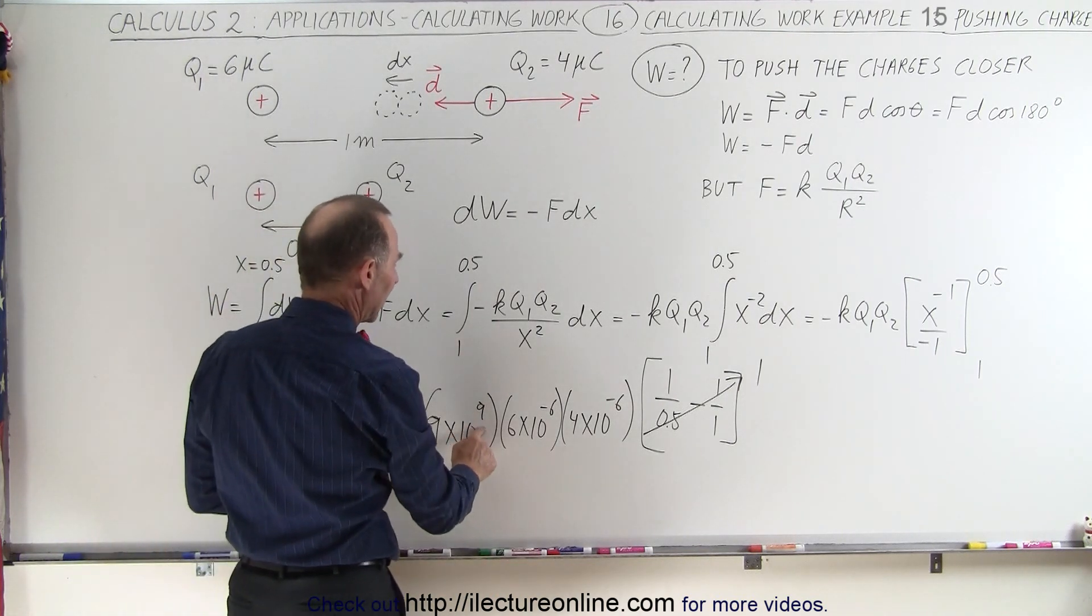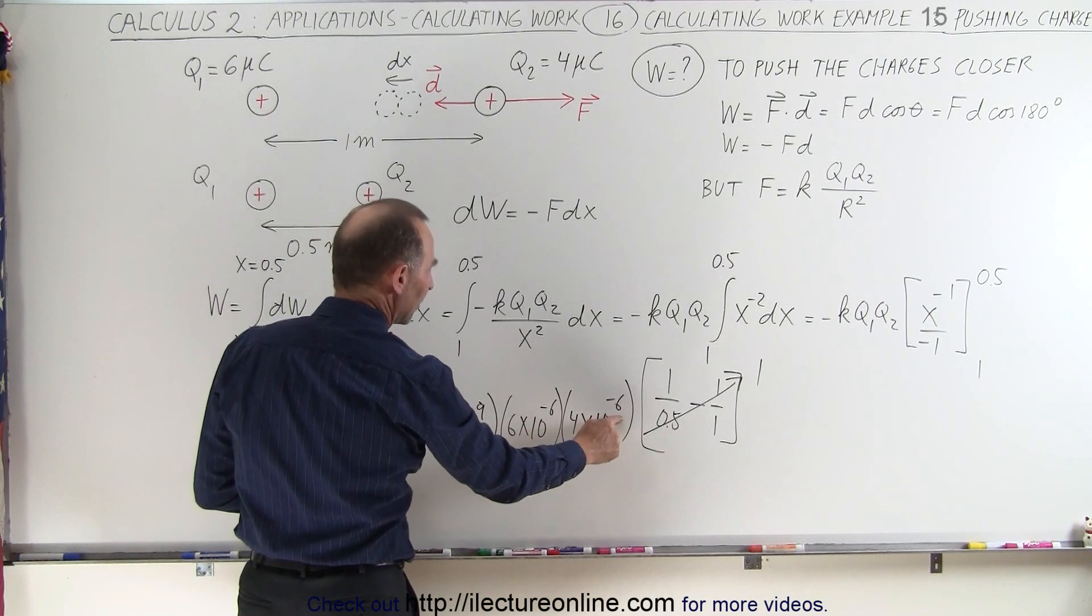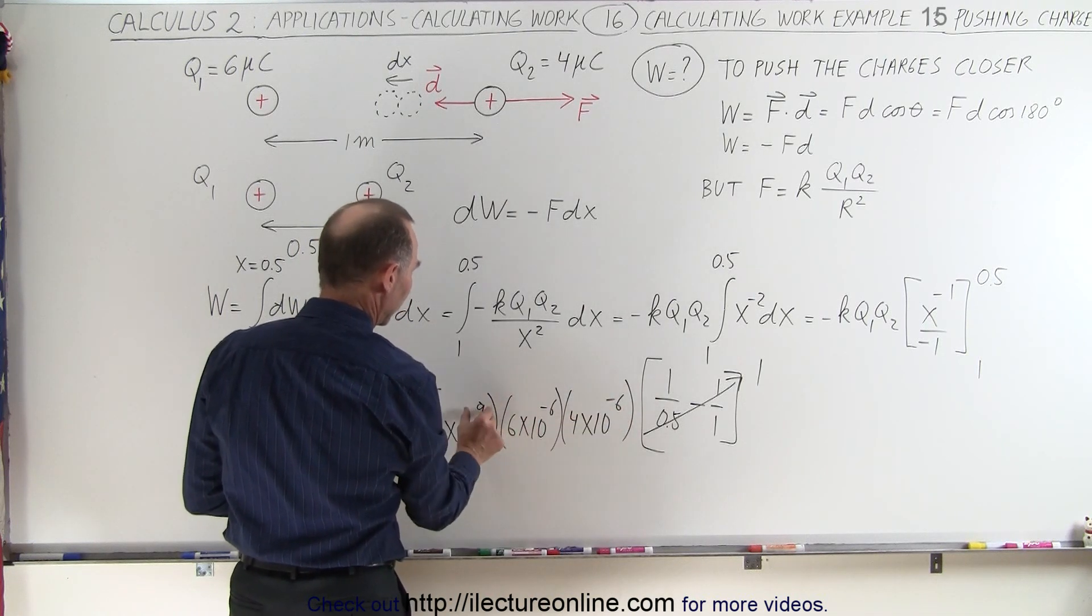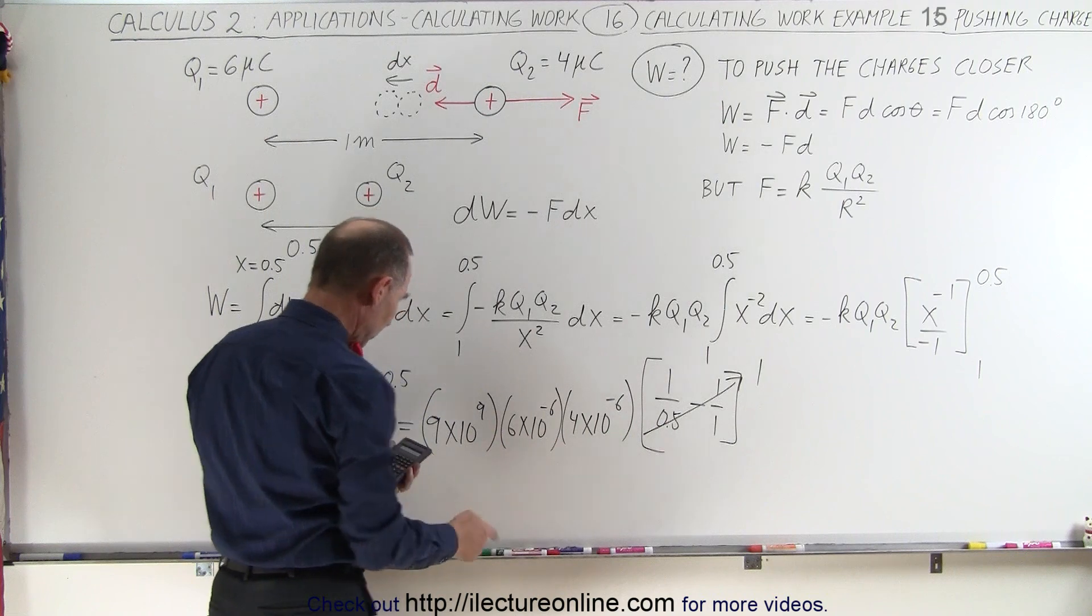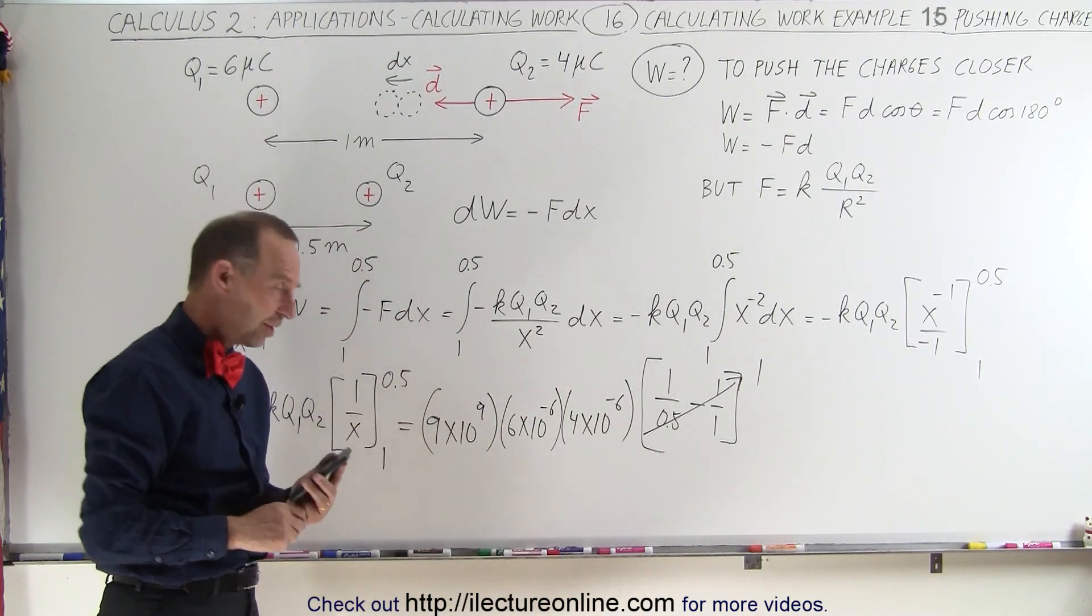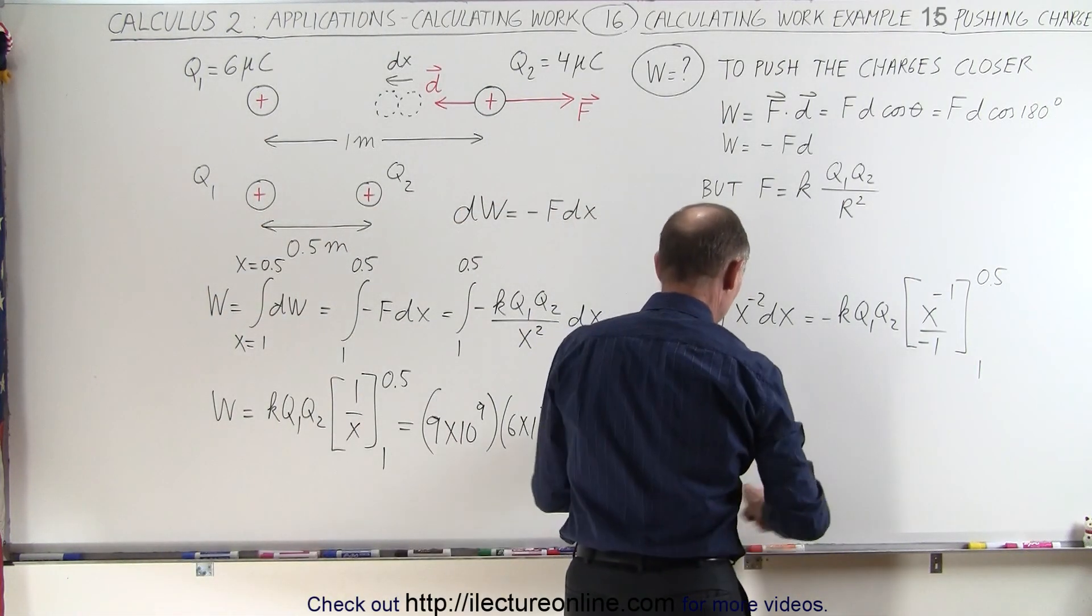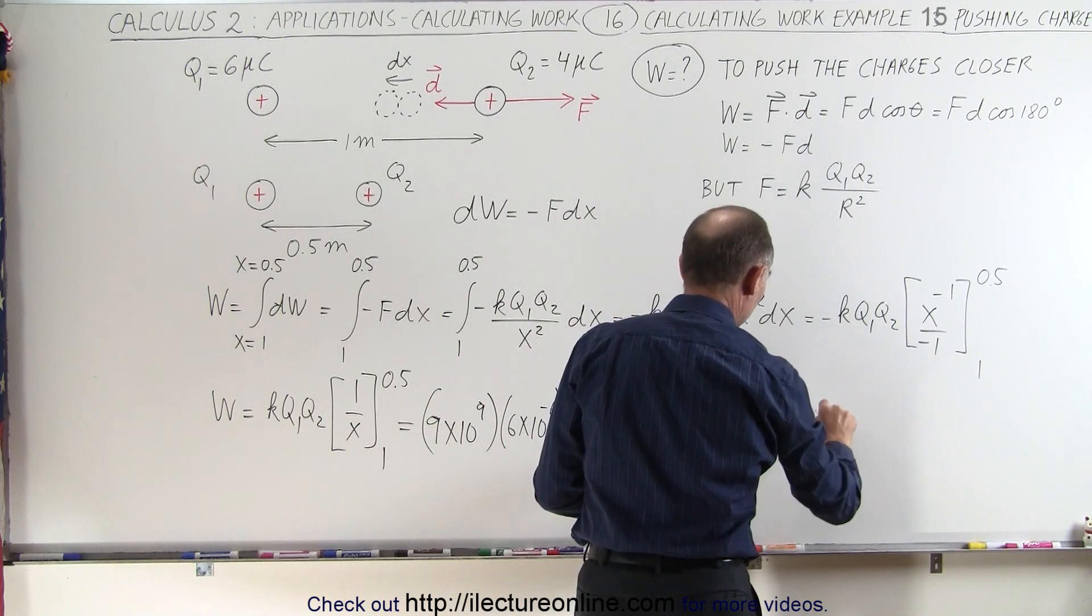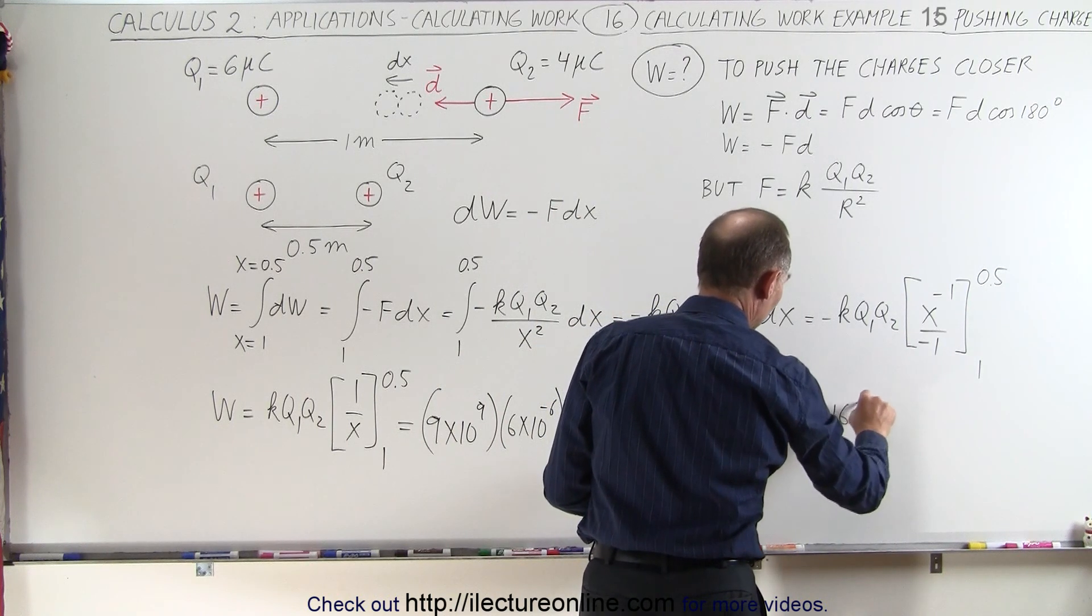We have 10 to the 9th, 10 to the minus 6, 10 to the minus 6. That's 10 to the minus 12. 10 to the 9th. That's 10 to the minus 3. Times 216. That would be equal to 0.216 joules.